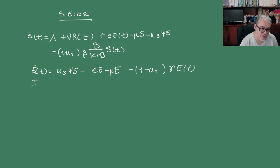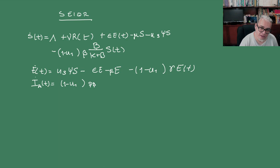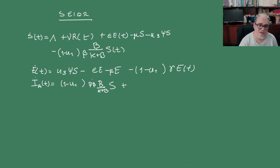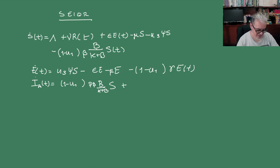Tenemos los infecciosos asintomáticos. Los asintomáticos van a ser (1 - U1) por una fracción P por beta_B — la tasa de nuevos casos. Este término no son los que están en contacto con infecciosos, sino los que están en contacto con la población de bacterias, y la población de bacterias se va a reproducir dentro del hospedero con cierta tasa.